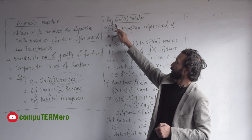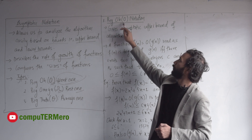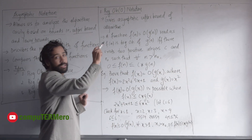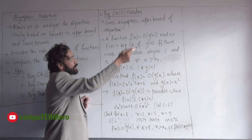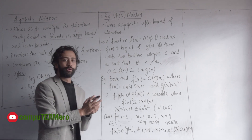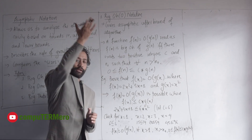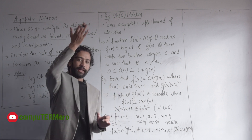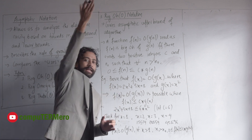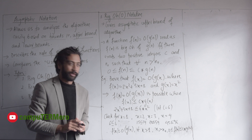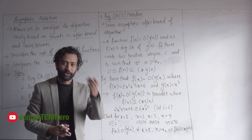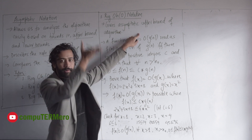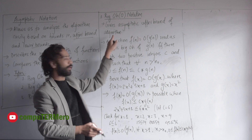You can understand the Big O notation. Big O is an asymptotic upper bound, even though the algorithm is analyzed. We have to analyze the algorithm. So, this is an asymptotic upper bound of the algorithm.